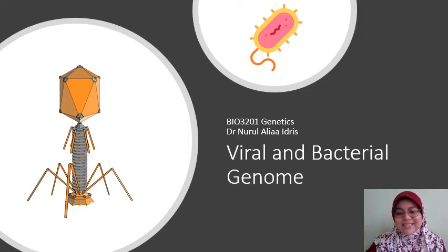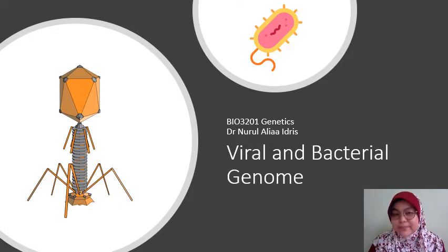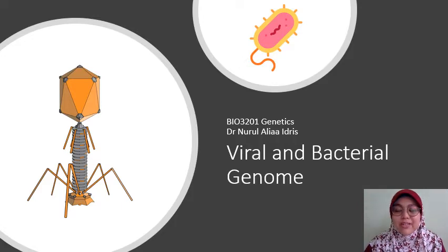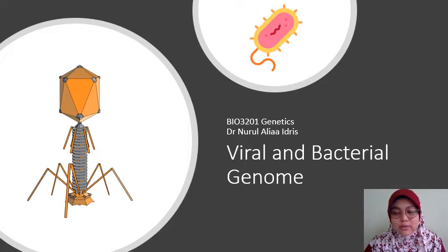Hello guys, Dr. Alia here. Today we are going to continue into Chapter 7, Chromosome Organization and Molecular Structure. Before we learn about how chromosomes are organized in the cell, let's first have a look at the different types of chromosomes or genomes that are out there. For viruses and bacteria, there are slight differences in their genome compared to eukaryotes or us humans.